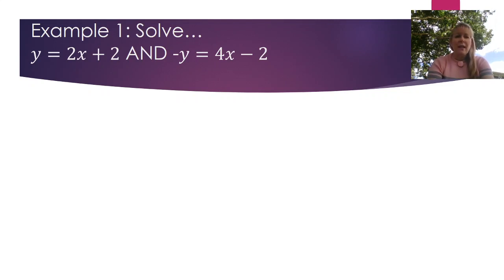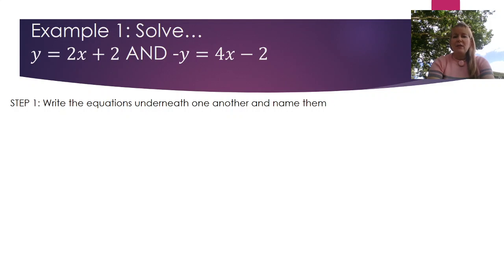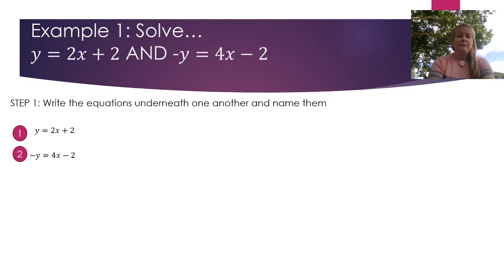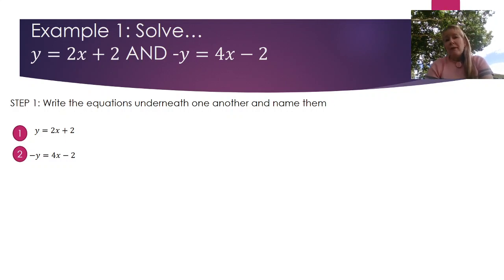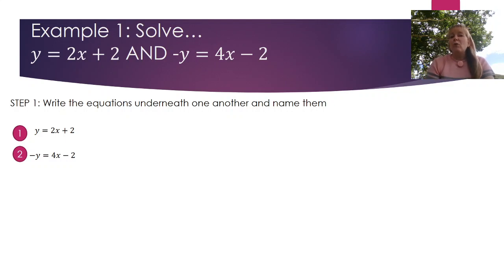In our first example we're going to be solving two equations: y = 2x + 2 and -y = 4x - 2. Our very first step is to write the equations on top of one another and name them equation 1 and equation 2. This gives us a better picture than when they're side by side of what we can actually do with these equations. The word elimination means to get rid of something — we are eliminating or removing a variable from the equation.